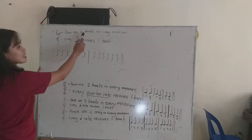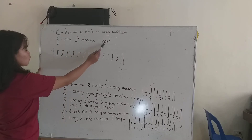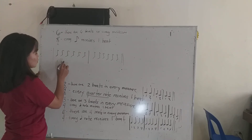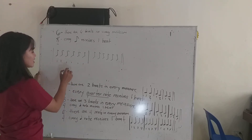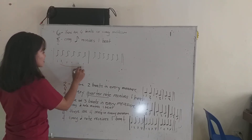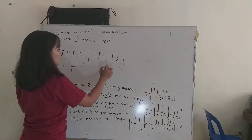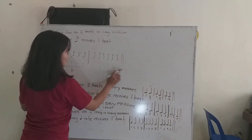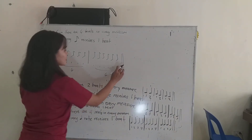There are how many beats? 6 beats. Every 8th note receives 1 beat. So this is 1, 1, 1, 1, 1, 1 — total is 6. So this is a total of 6.